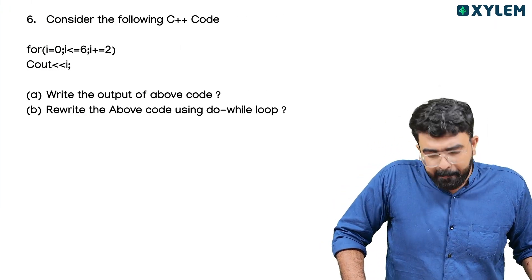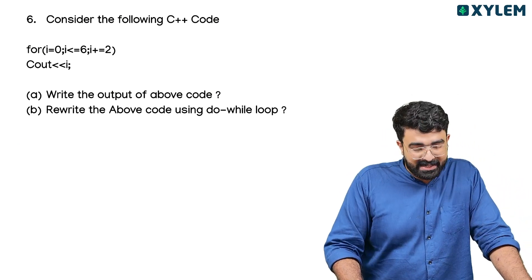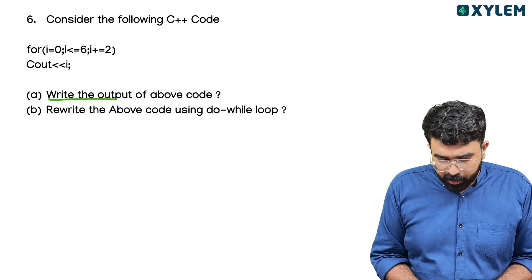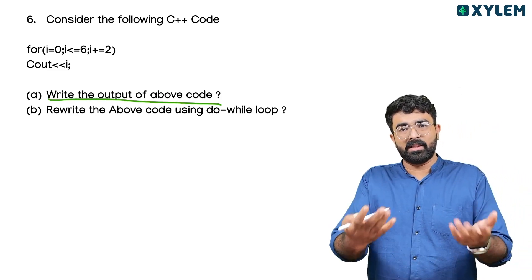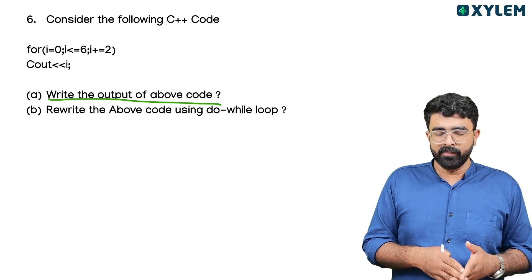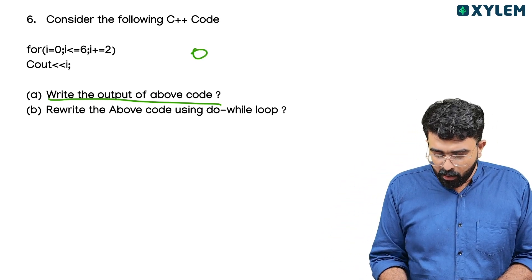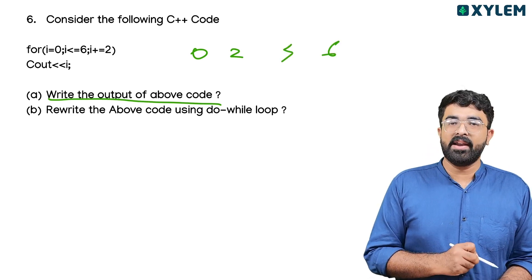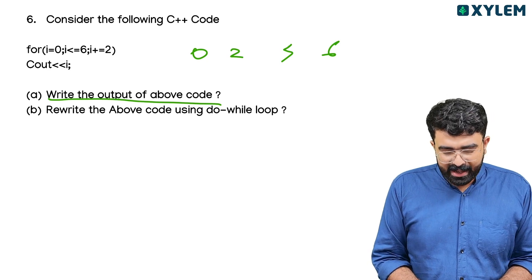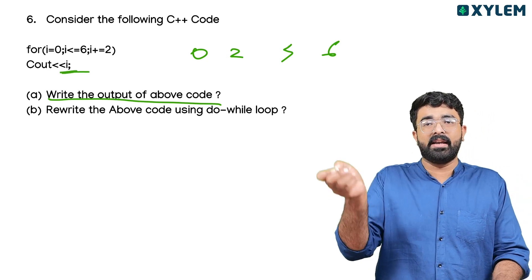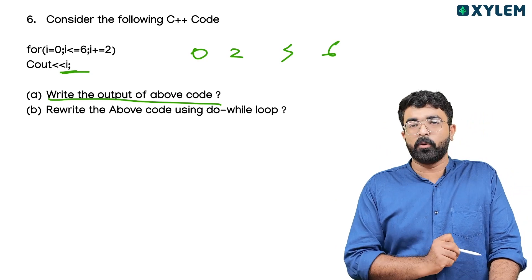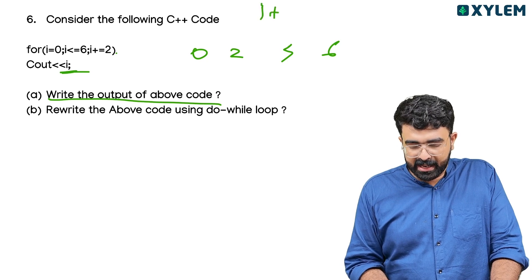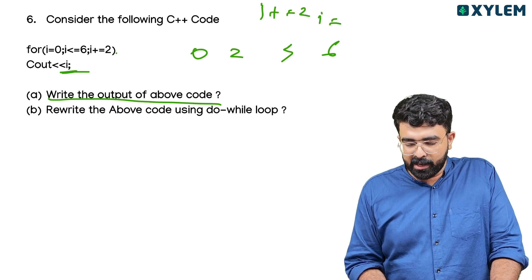Next, we will consider the following C++ code: for i is equal to 0; i is less than or equal to 6; i plus equals 2; cout i. Write the output of the above code.